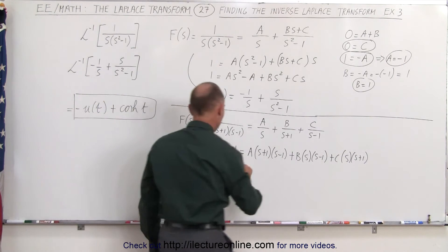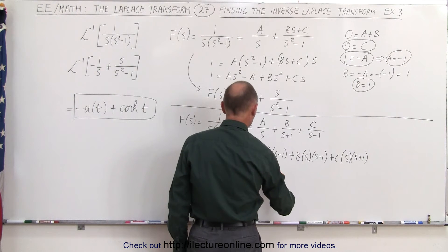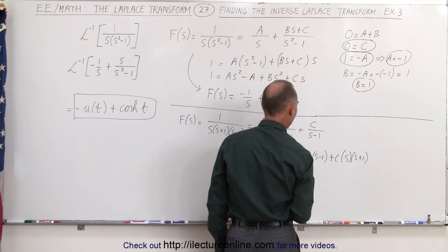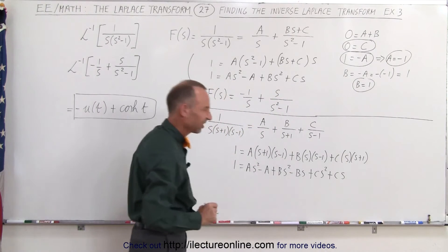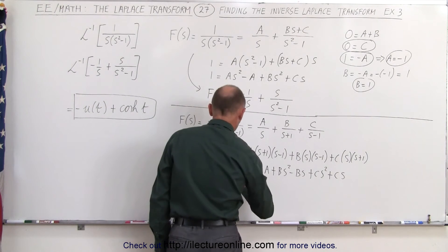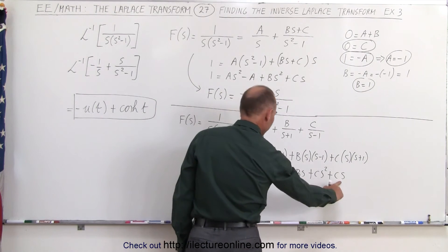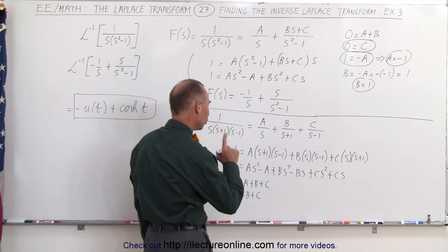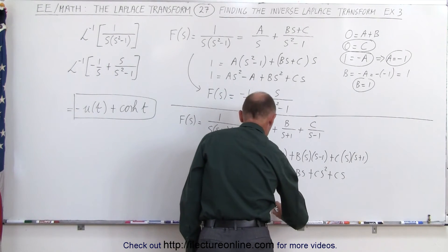Expanding this, we get 1 equals a·s squared minus a, plus b·s squared minus b·s, plus c·s squared plus c·s. Collecting the s squared terms gives 0 equals a plus b plus c. Collecting the s terms gives 0 equals minus b plus c. And the constant term gives 1 equals minus a, so a equals minus 1.